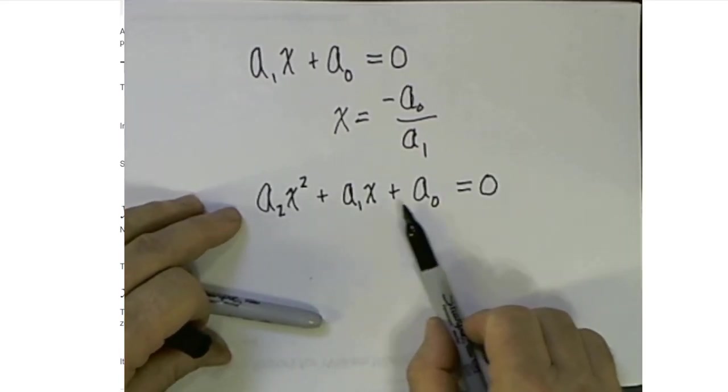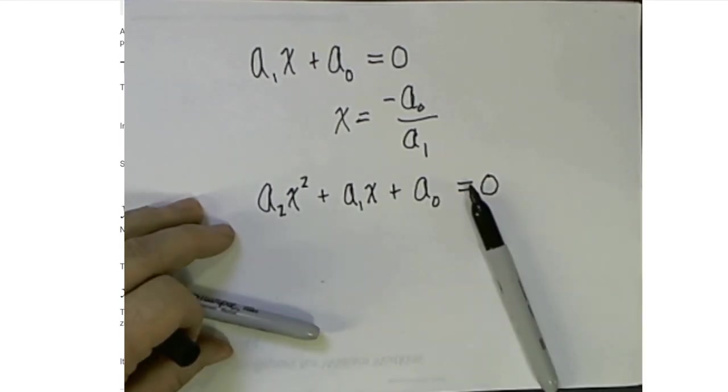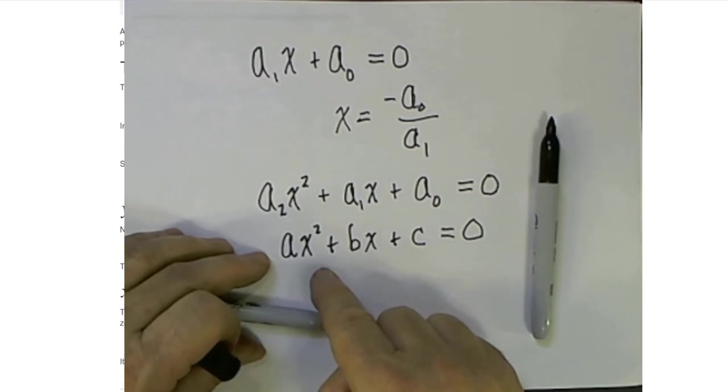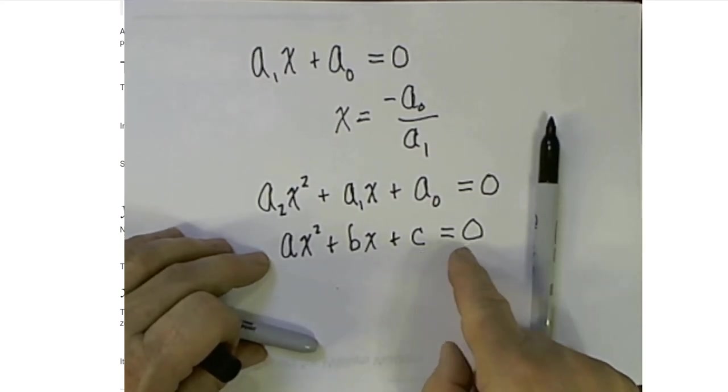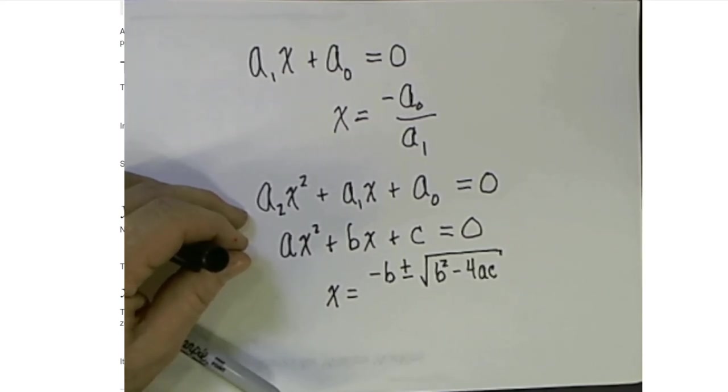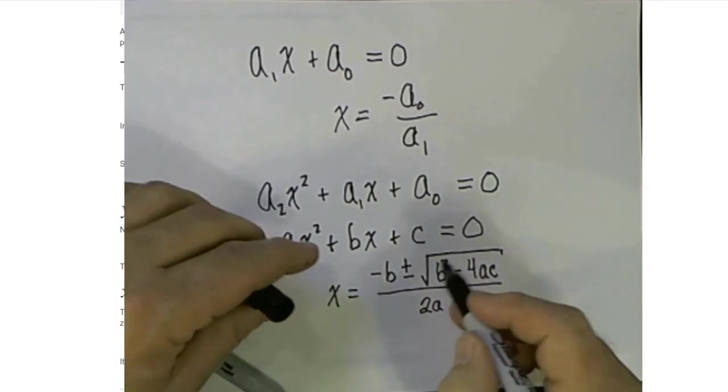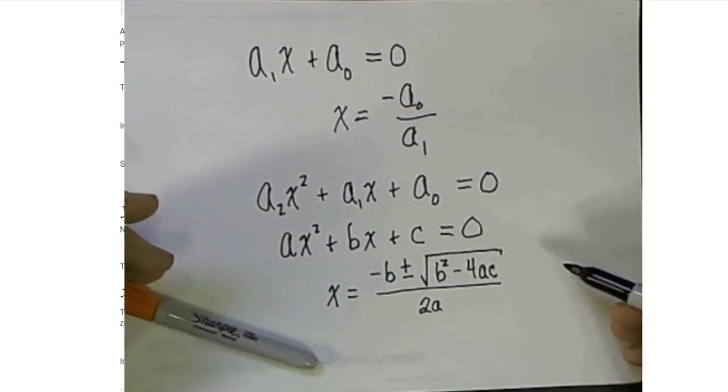We took quite a bit of time discussing how to solve a quadratic equation. Usually we call this an a, b, and a c. And you know that if ax² plus bx plus c equals zero, then x equals -b plus or minus the square root of b² minus 4ac, all divided by 2a. And we learned how to do that by completing the square.